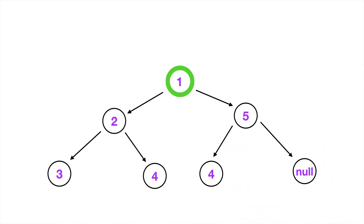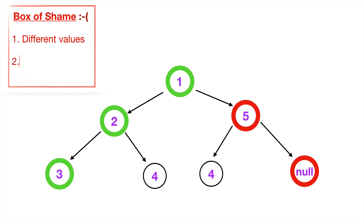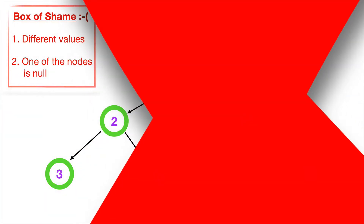Now let's look at a diagram of a tree that's not symmetric, to understand what conditional checks we need in our code. The root node with value one is fine — symmetrical. But at level two, the left child has value two and the right child has value five. That's our first failure condition: the two compared nodes have different values. Going deeper, we see another problem: one node has value three, but the corresponding mirror node has a value of null. That's the second condition: one node is null but the other has a value. This tree is not symmetrical.